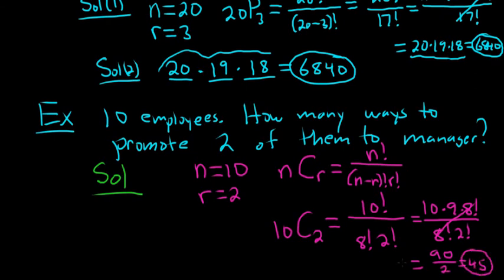Kind of rushed through that. But again, the idea is that you know when to use which. So when order doesn't matter, you use combinations. When order matters, you use permutations. Examples of combinations include hiring people for the same job, promoting people, forming committees. Permutations is anything where the order matters.